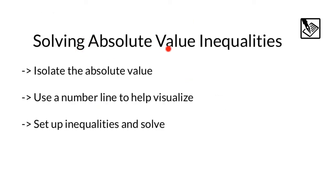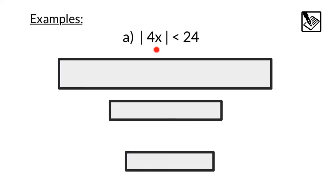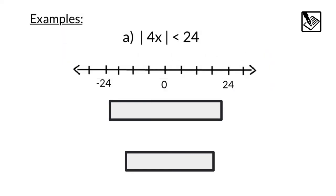For solving absolute value inequalities, we want to isolate the absolute value once again. We can use a number line to help visualize the situation, and then set up and solve the inequalities. Example A: we have absolute value of 4x is less than 24. I'm going to use a number line to help visualize — you don't have to make tick marks all the way to 24, you can just write a number to visualize what's happening. If we are less than 24 spaces from 0, I'm going to use open dots since it's not equal to.